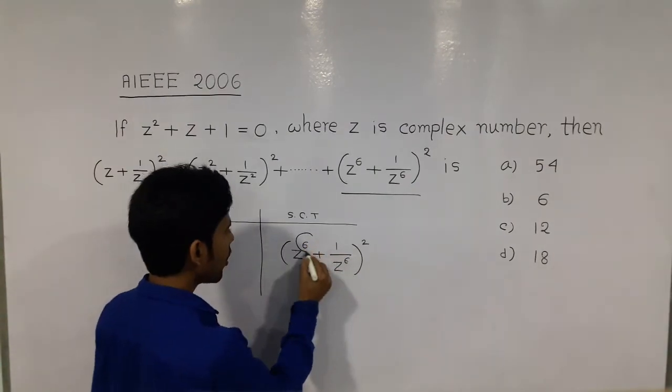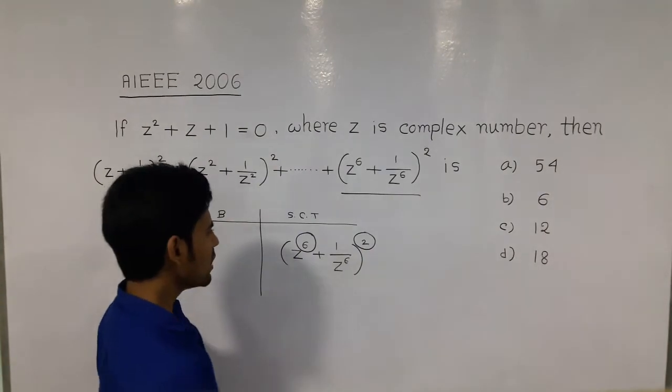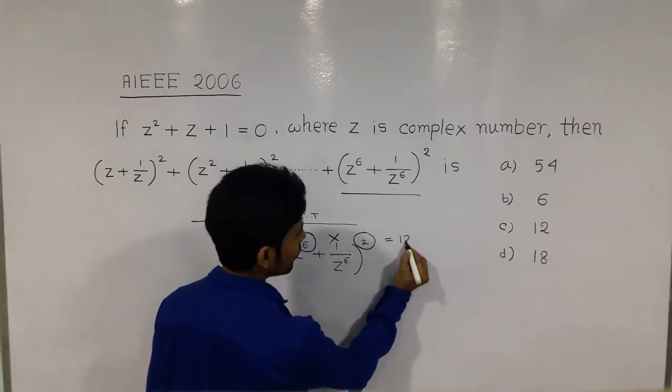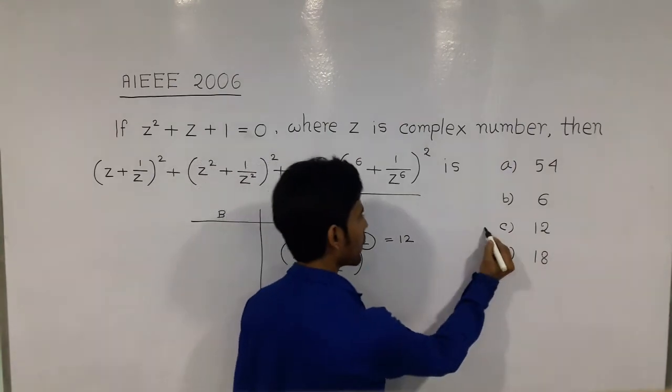Here the distinct power is what? 1, 6, and 2, 2. If this power is multiplied together, then what will it be? 12. So the answer is option C, correct.